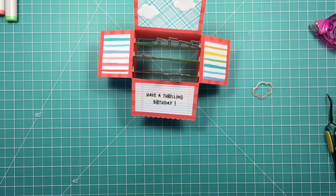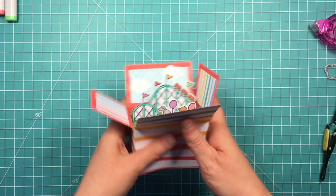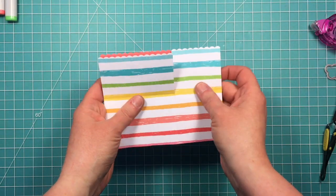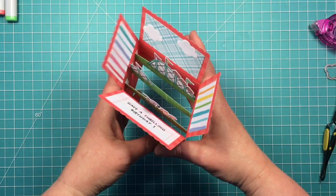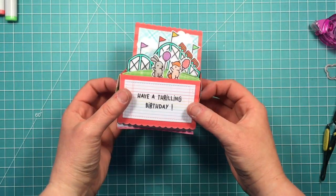And then it's all finished and ready to go into an envelope and send to someone for a fun birthday surprise. You can see how it folds perfectly flat here. And then when they pull it out of the envelope, it opens up to this fun summer theme park scene.